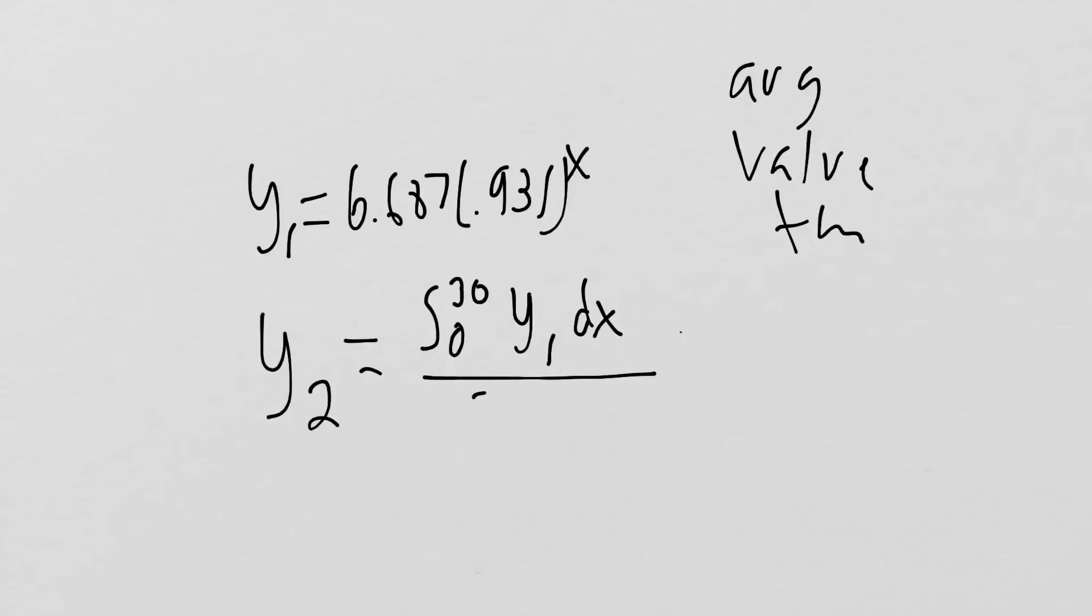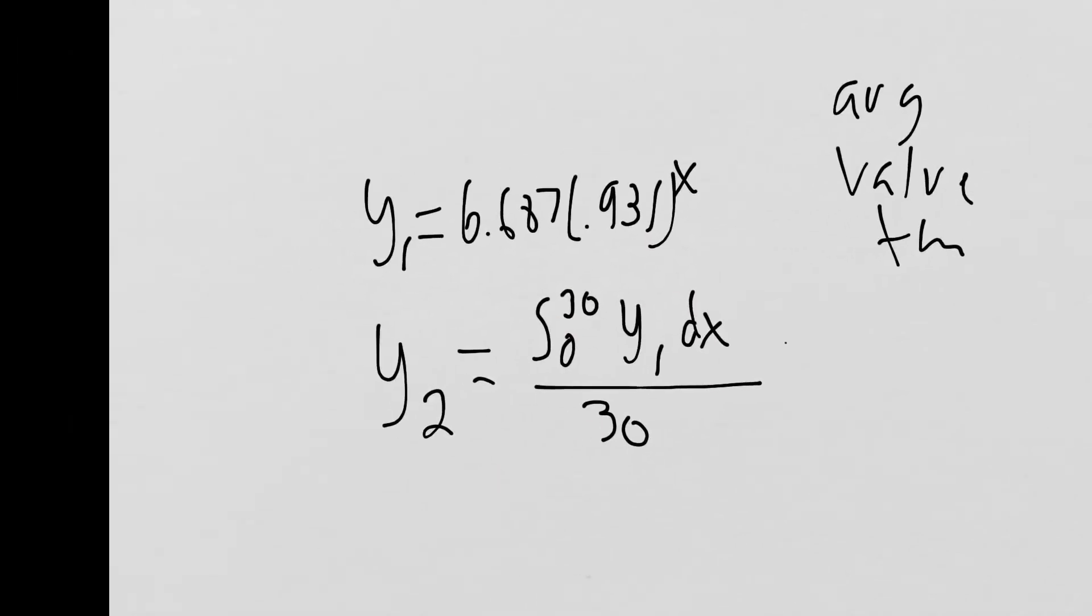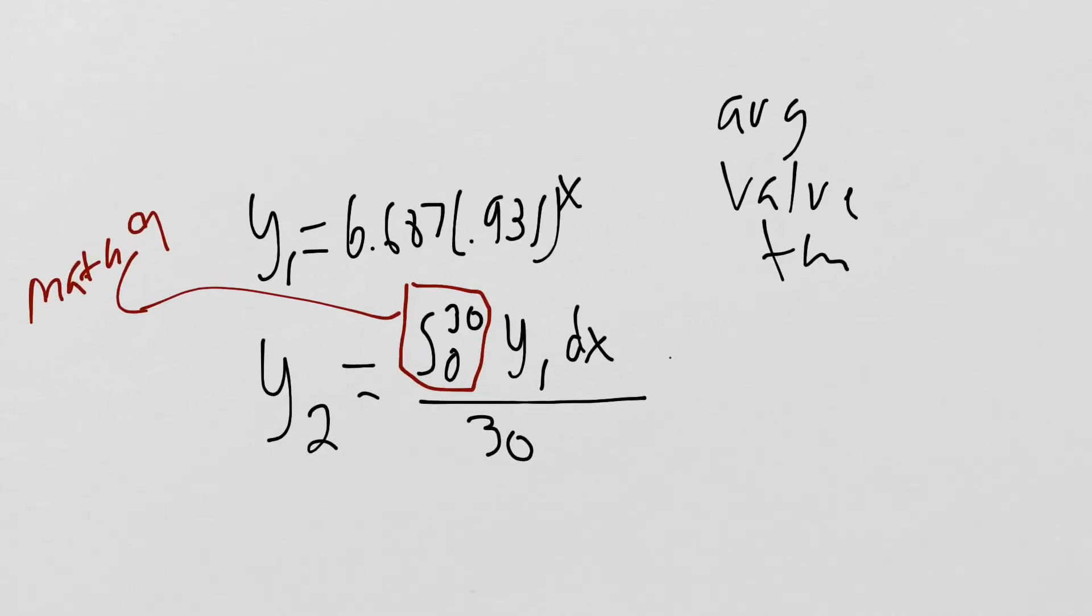How do we get this integral in our calculator? That would be math 9, which will pull up the integration. We are going to integrate from 0 to 30, Y1, divided by 30. That will give us the average value. Then once again, we want to find out where do these intersect.